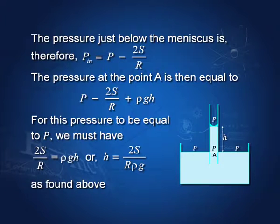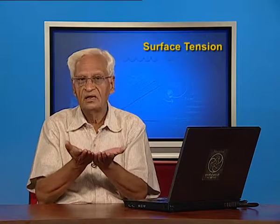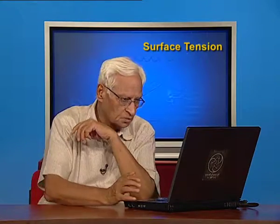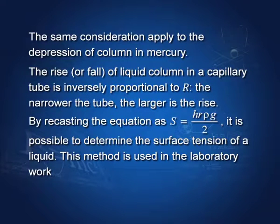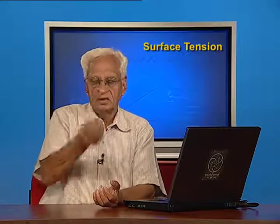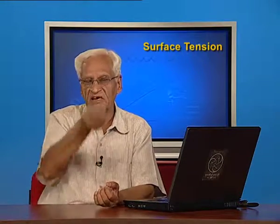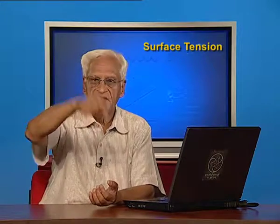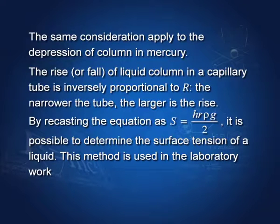The same thing happens with mercury — the only difference is that mercury goes down in the tube rather than going up. This equation can also be used to determine surface tension in the laboratory: dip a small tube, measure the rise of the liquid column and the radius of the tube, then use S = h·r·ρ·g / 2.